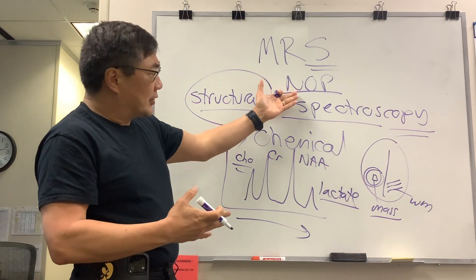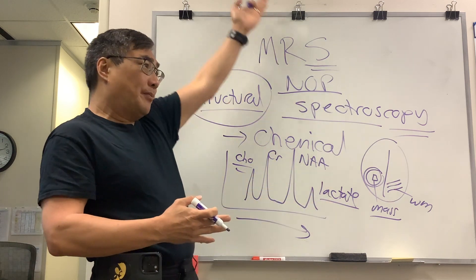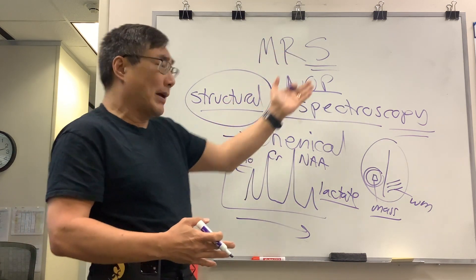So for neuro-ophthalmologists, the things we're looking for are things that might have big lactate peak, which is anaerobic metabolism like mitochondrial disease.